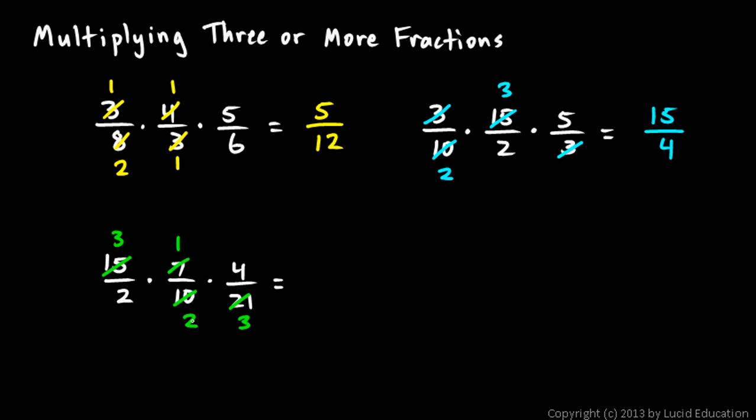And then this four can simplify with either of these twos. Let's do this one. The four and the two divided by two, this becomes a one and a two. And look here, this three and this three will simplify, and so will these twos. It looks like everything cancels out here. If you multiply across the top, you get 3 × 2 = 6 for the numerator. And down here, 2 × 3 = 6. And 6/6 reduces to one.